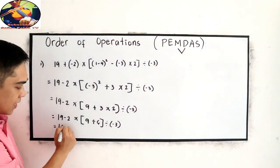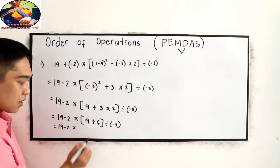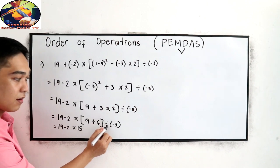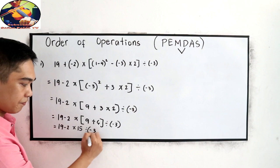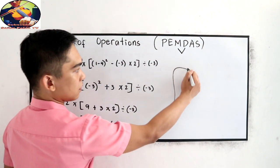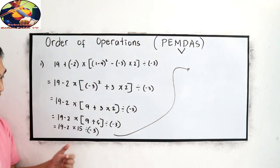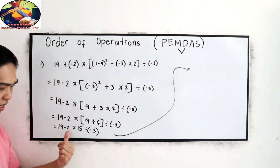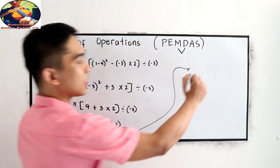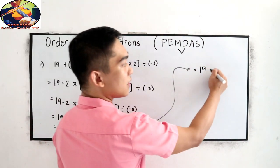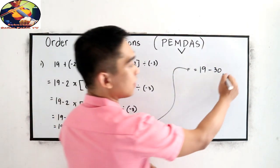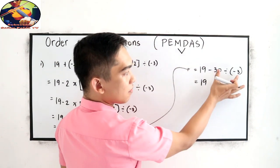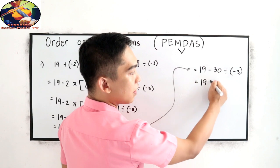Next: 19 minus 2 times — simplify 9 plus 6, that is 15 — divided by negative 3. For multiplication and division, it depends on which operation occurs from left to right. So negative 2 times 15 is negative 30. Copy 19, negative 30 divided by negative 3 is positive 10.